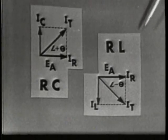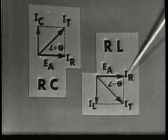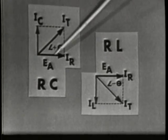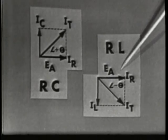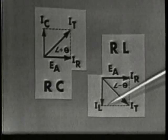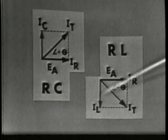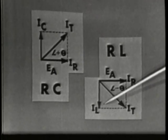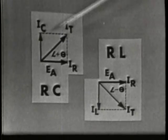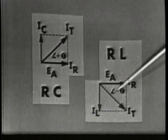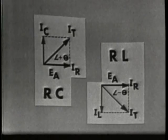In the RL circuit, EA is plotted as the reference vector, and IR is shown in phase with EA, the same way as in the RC circuit. However, since the voltage in the inductor leads the current — or, saying it another way, the current in the inductor lags the applied voltage — we must show the 90-degree phase shift caused by IL. It will be plotted 90 degrees behind EA, or in the opposite direction of IC. The total current in this circuit is said to lag EA, and it has a negative phase angle.